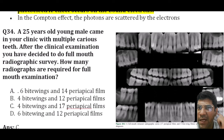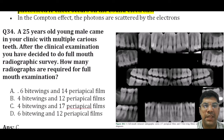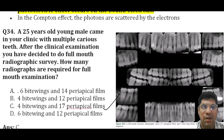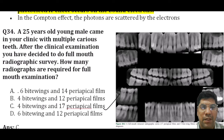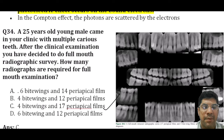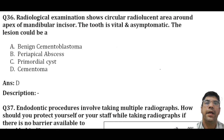A 25-year-old male presents with multiple carious teeth. After clinical examination, a full mouth radiograph survey is decided. How many radiographs are required for full mouth examination? The answer is 4 bite wings and 17 periapical films. Bite wings are used to visualize interproximal caries and assess the height of the alveolar bone, while periapical radiographs assess the overall health of teeth and supporting structures.